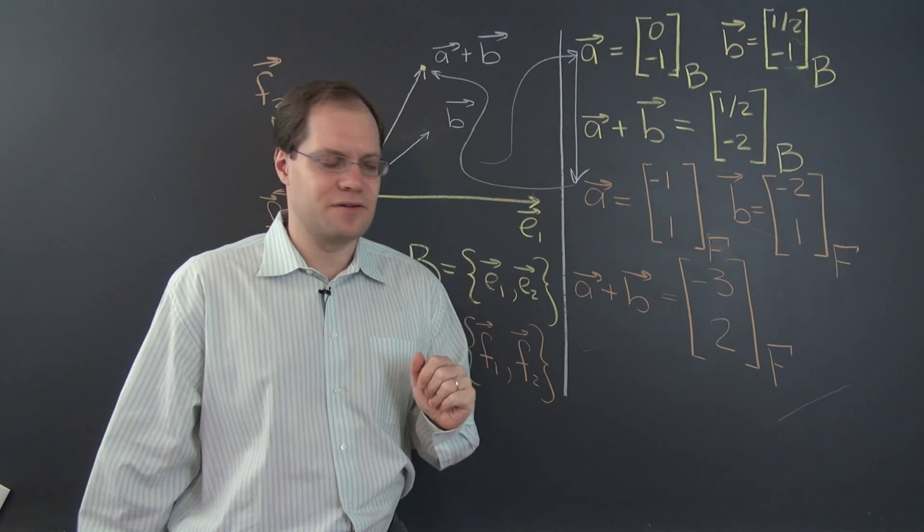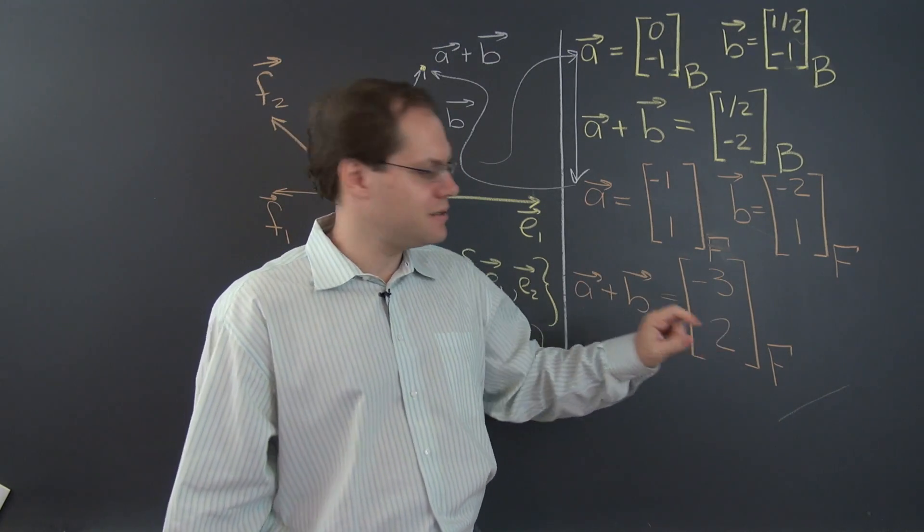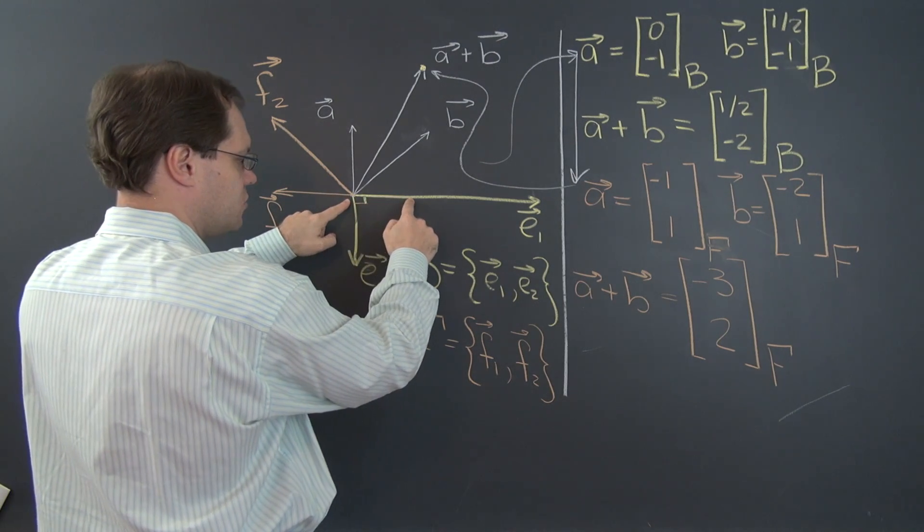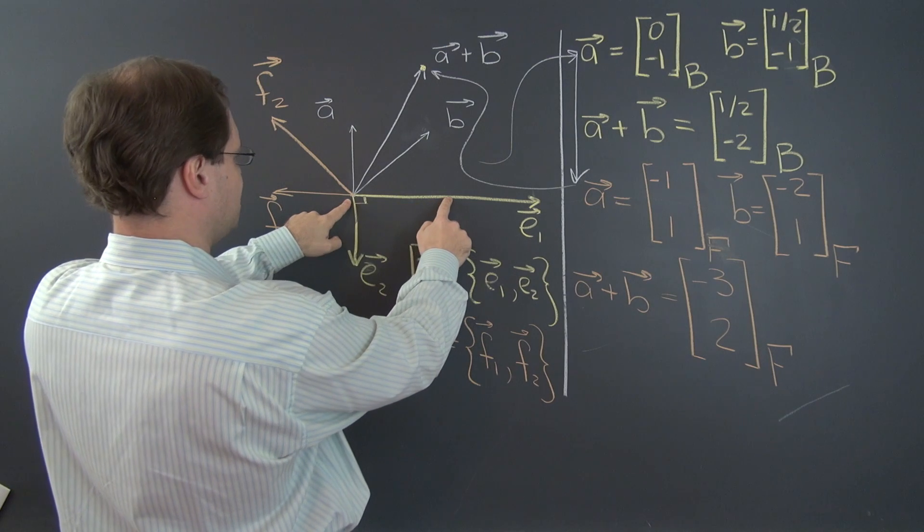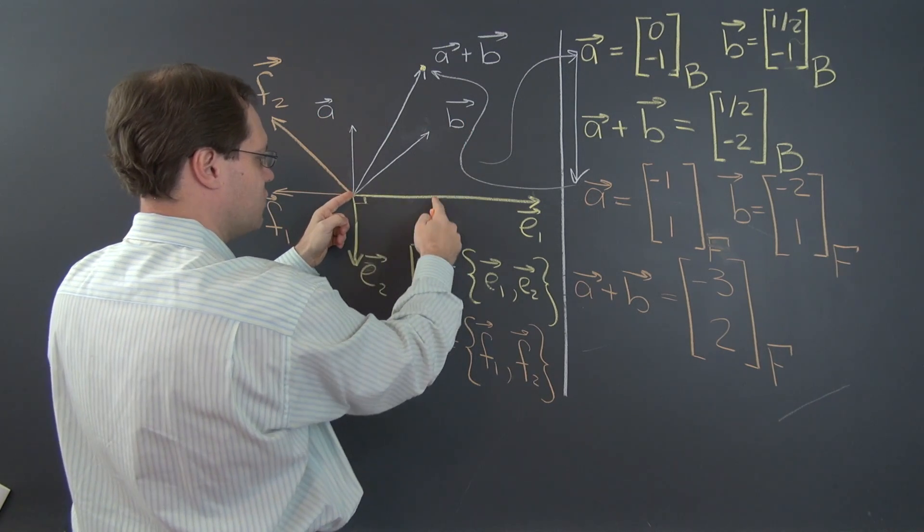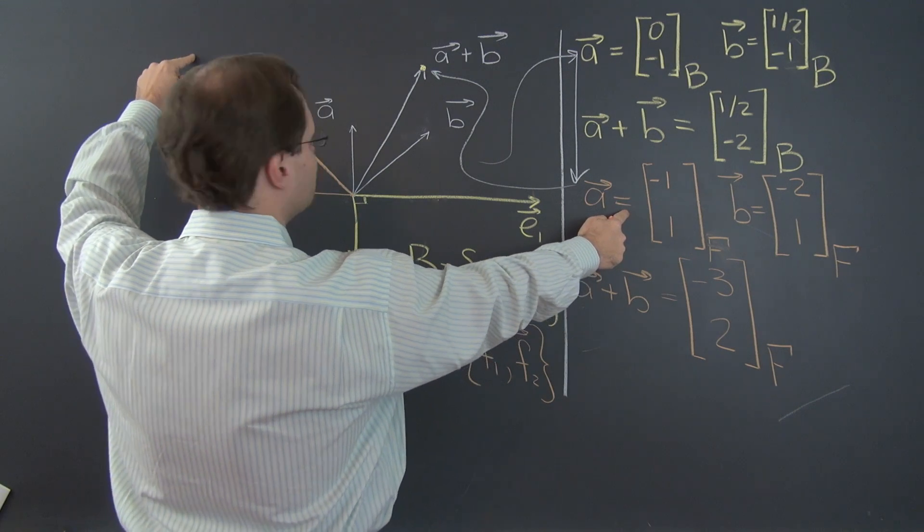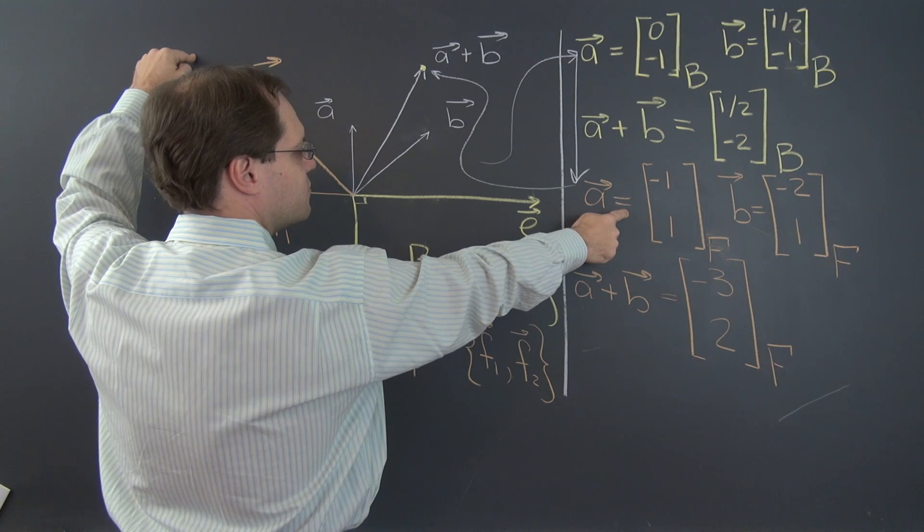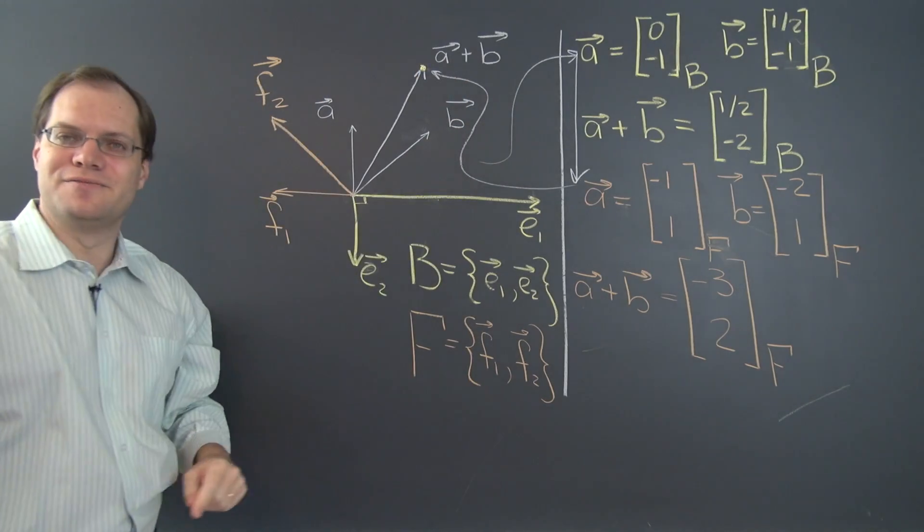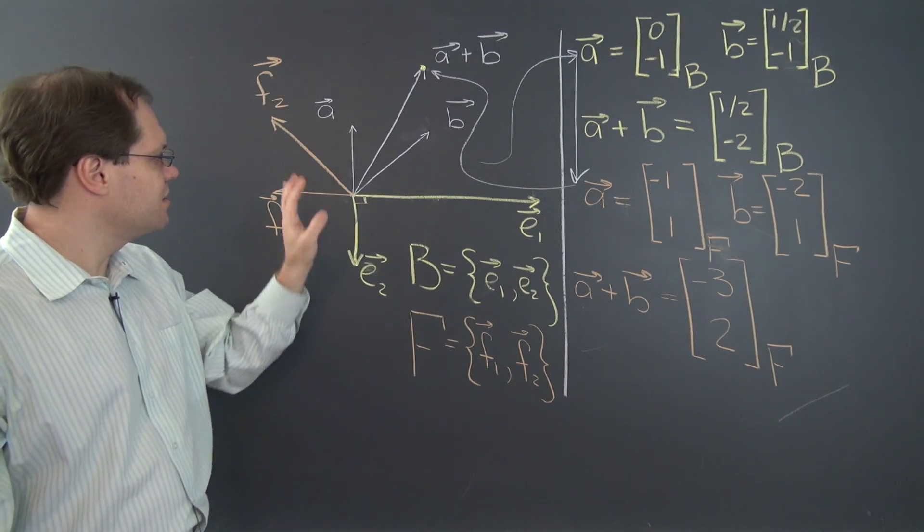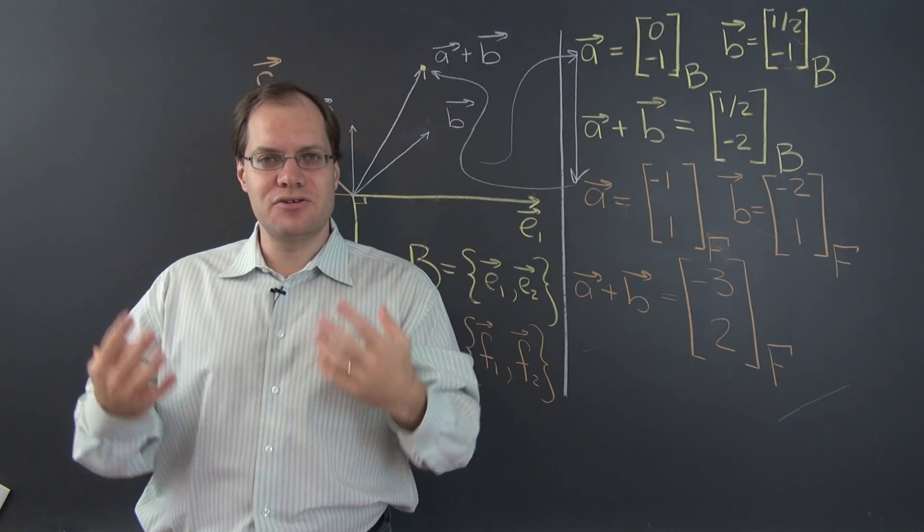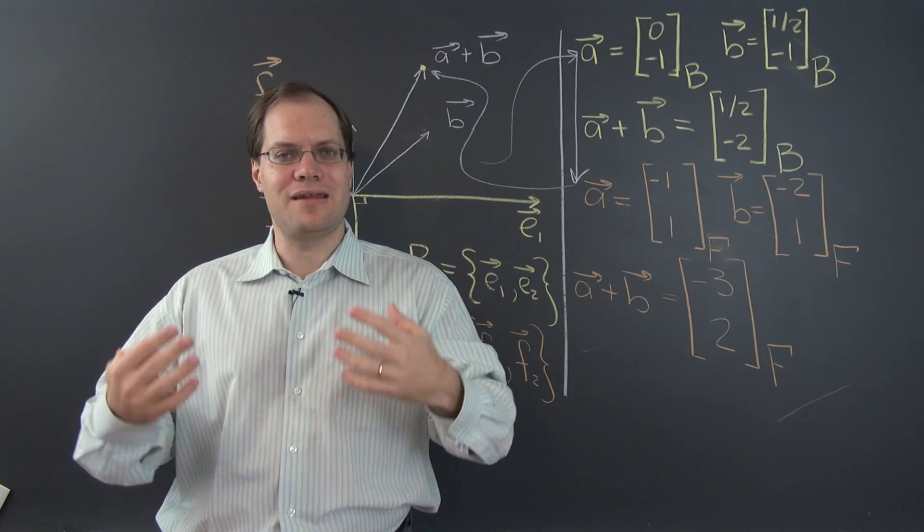But now let's see if this corresponds to the same answer. It had better do that. So we have minus 3 of F1, plus 2F2. So it's this vector plus this vector. Add them up by the parallelogram rule and you end up right here. So it works. Once again, it worked in the yellow basis and it also works in the orange basis. And of course, it would work in any basis. And this is an illustration of the fact that all bases are created equal. And it's up to us to choose one. And here we chose two different ones. And we learned that all of the intermediate numbers changed.